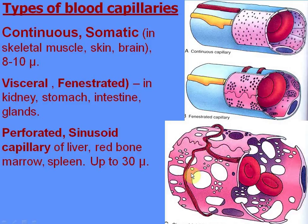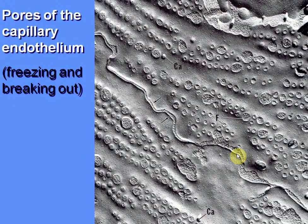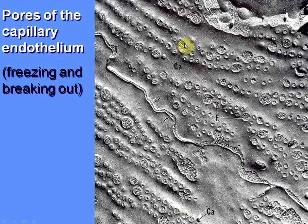A scanning electron micrograph after freeze-fracturing of endothelial cells shows the boundary between two cells and numerous pores available for transport of substances through the endothelial cell cytoplasm.